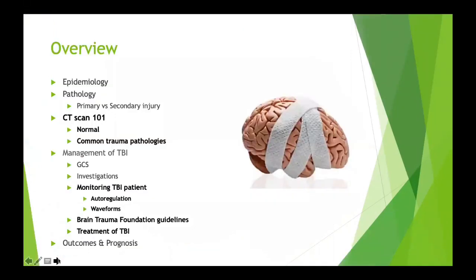A quick overview: we'll look at the epidemiology of traumatic brain injuries, the pathology, and the difference between primary and secondary injury. I'll do a brief CT scan 101, running through a systematic way to look at a CT scan, and discuss a few common trauma pathologies. Then we'll get to the meat of the talk — the management of these patients in ICU, including patient selection for monitoring, waveform interpretation, and the Brain Trauma Foundation guidelines.